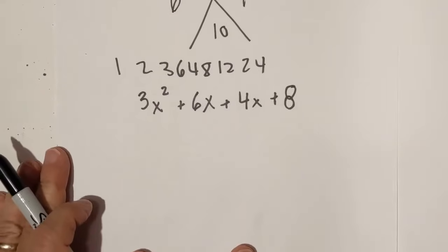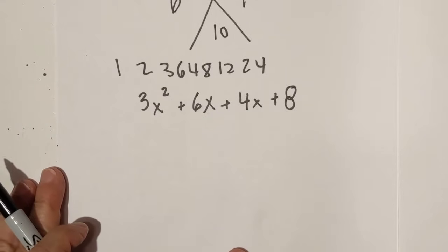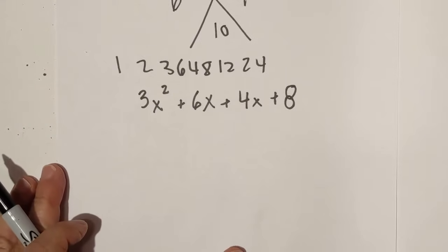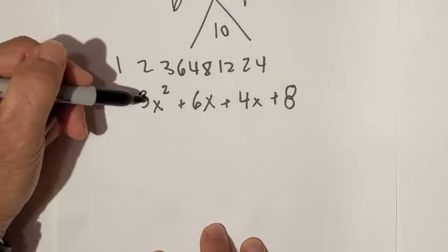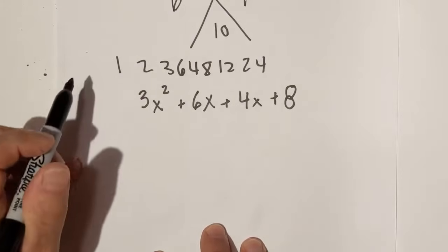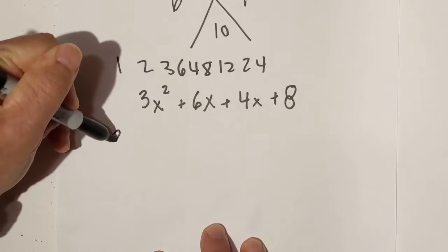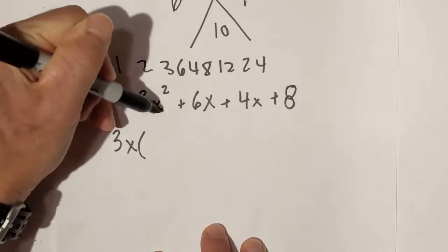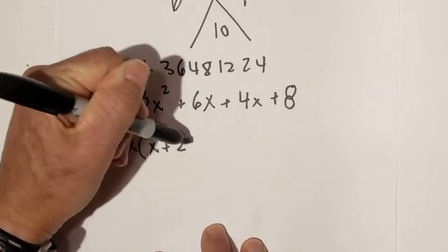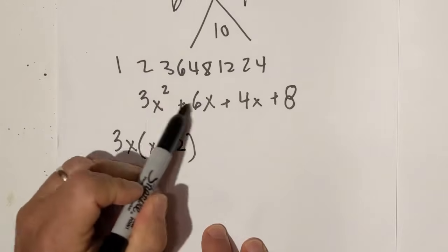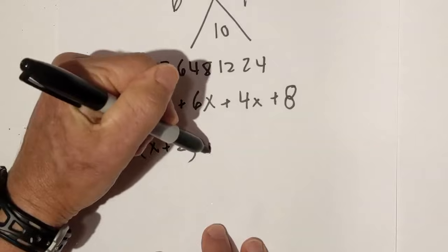Now let's get started with grouping. I'll leave a link for a video I have on grouping if you need to refresh your memory on that. The first thing I do is find the greatest common factor, and that's going to be 3x, and that's going to be x plus 2.